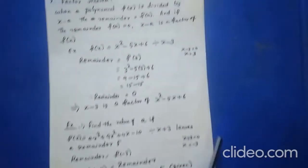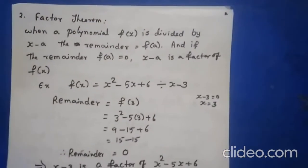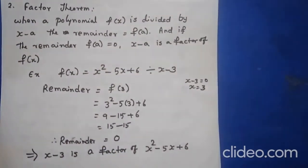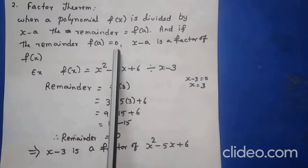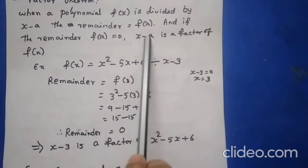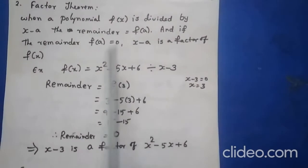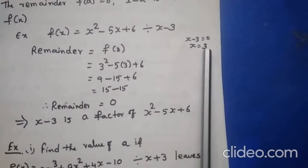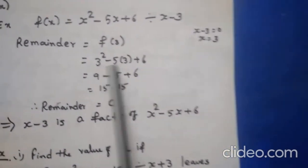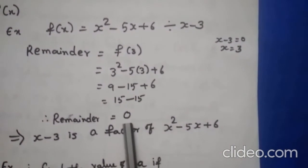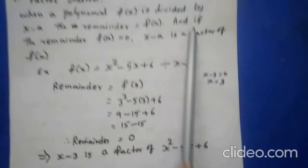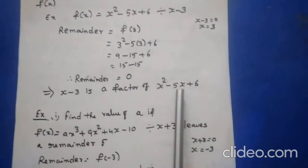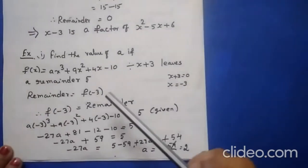Next is the Factor Theorem — it extends the Remainder Theorem. When f(x) is divided by x - a and the remainder f(a) = 0, then x - a is a factor of f(x). For example, f(x) = x² - 5x + 6 divided by x - 3. Here x = 3, and f(3) = 9 - 15 + 6 = 0. Since the remainder is 0, x - 3 is a factor of x² - 5x + 6.